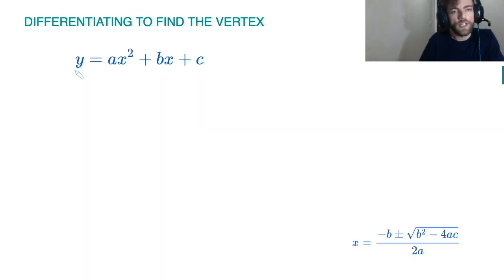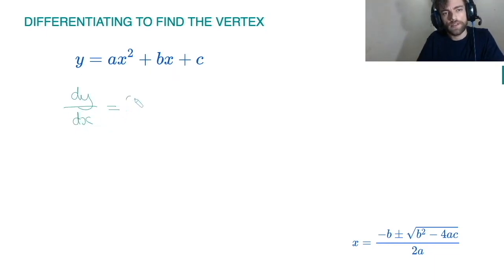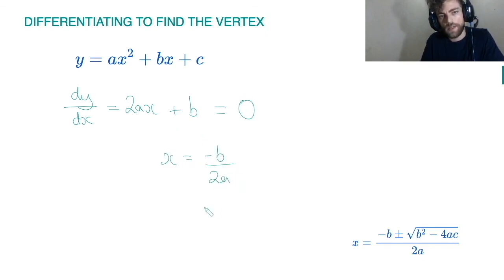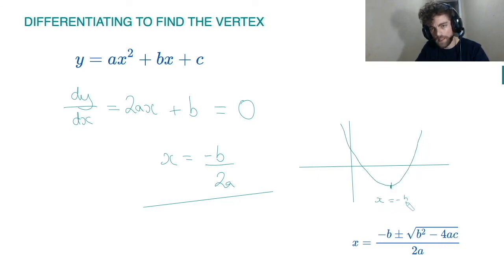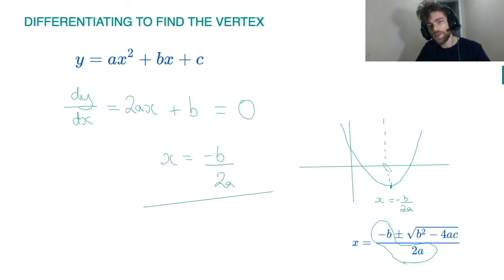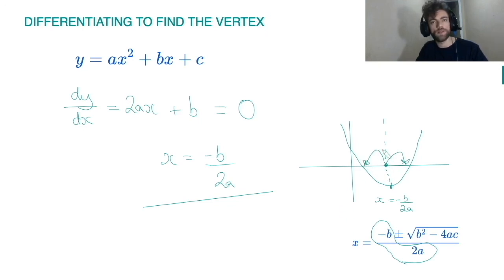More generally, for y equals ax squared plus bx plus c, differentiating gives dy/dx equals 2ax plus b. Setting that equal to zero and solving gives x equals minus b over 2a — the x-coordinate of the vertex. This makes brilliant sense: the vertex sits bang in the middle of the parabola, which is the axis of symmetry, and all quadratic functions are symmetrical. Indeed, looking at the quadratic formula, the roots are centred on minus b over 2a — the axis of symmetry — with the square root of the discriminant added or subtracted on either side.